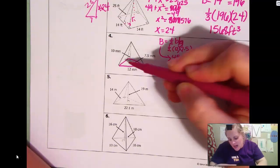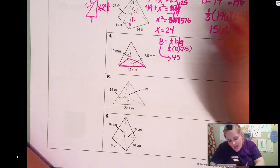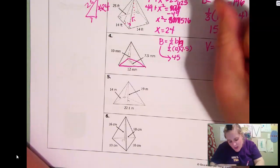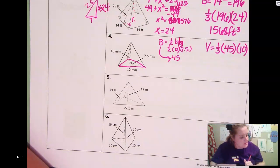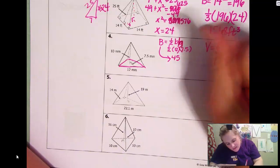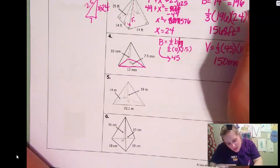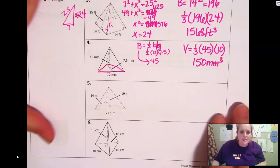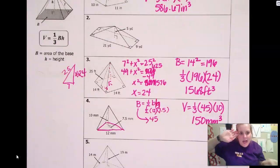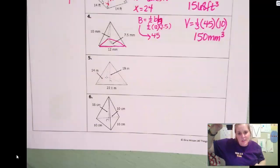Again, the height is 10. They gave us that. So volume equals one third 45 times 10. 45 times 10. A third of that is 150 millimeters cubed. Okay. And I'm doing this quickly because I have a key that I'm just looking at the key, but you would just be typing these things in your calculator.